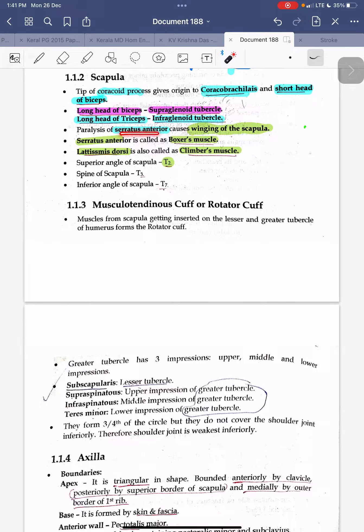Paralysis of serratus anterior causes winging of scapulae. Serratus anterior muscle is called boxer's muscle. Latissimus dorsi is called climber's muscle.